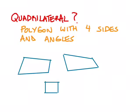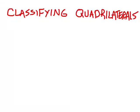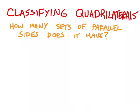Because we see them so often, we actually have a bunch of classifications for quadrilaterals beyond just what we have for other shapes like pentagons, and we're going to get more into that in this lesson. When it comes to classifying quadrilaterals, the first and probably most important question you're going to ask yourself is: how many sets of parallel sides does it have? Depending on the answer, you're going to be looking at one of several different types of quadrilaterals.